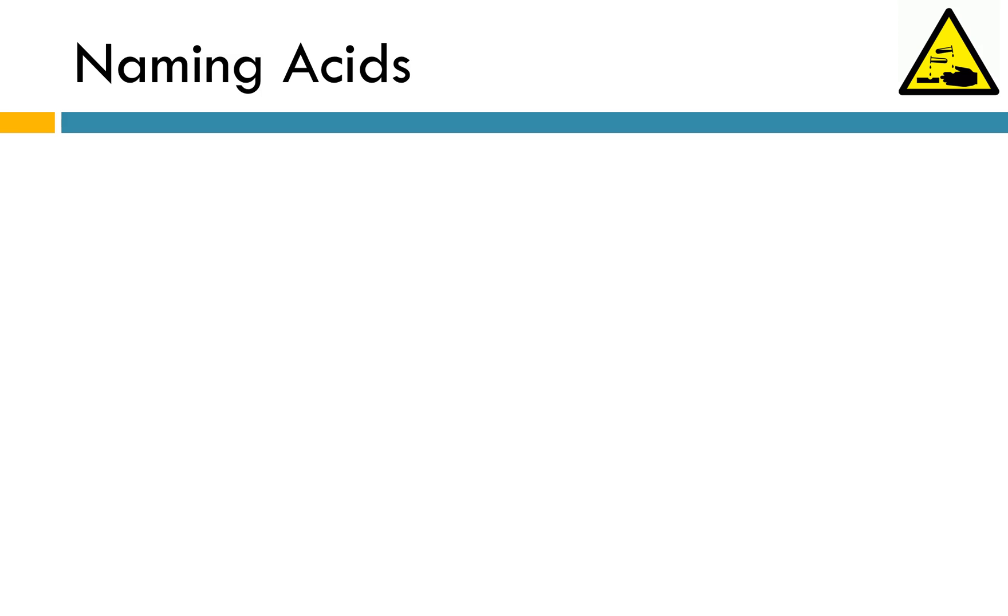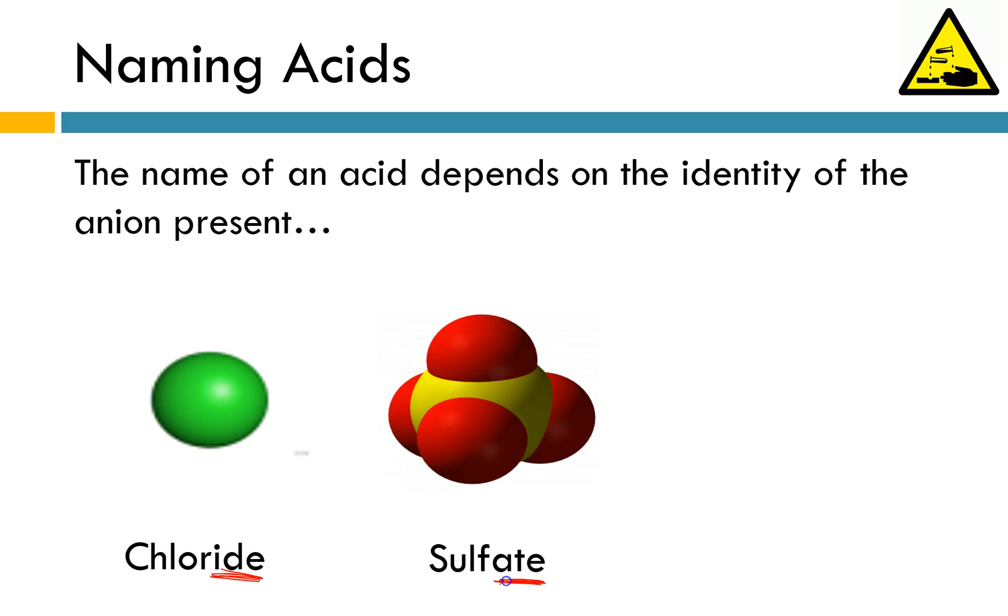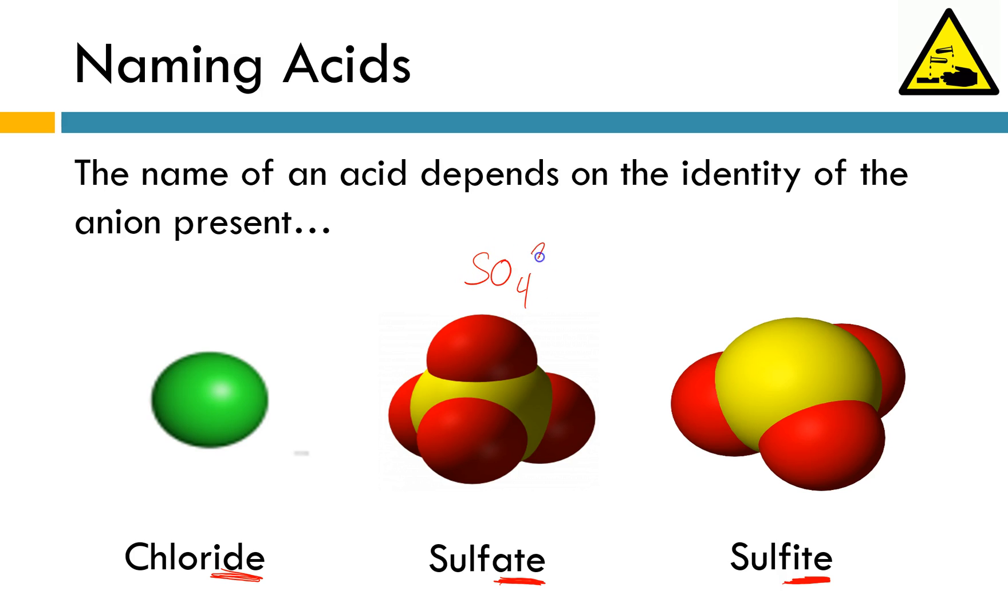Naming acids is different. Naming an acid really depends on what anion is present. If you think about it, every acid is going to have H+ as the cation. So the anion is going to determine how we name it. And anions really come in one of three different types. We have anions that end in -ide. These tend to be monatomic. We have anions that end in -ate. They tend to have lots of oxygen atoms present. And we have ions that end in -ite, which tend to have fewer oxygen atoms present than in the -ate version. So sulfate, for example, is SO4 with a charge of 2-. Sulfite is SO3 with a charge of 2-. So let's talk about how to name these.